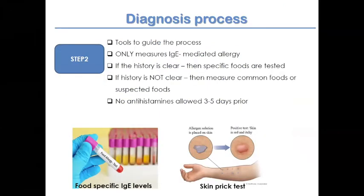After establishing a diet history and identifying potential problem foods, one can consider diagnostic tests. This is a guiding process, not a definitive diagnostic tool — it helps give direction. It measures IgE-mediated food allergy. If the history is clear, test those specific foods; if unclear, measure the most common or suspected foods.